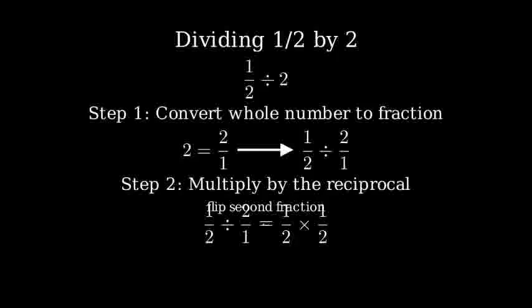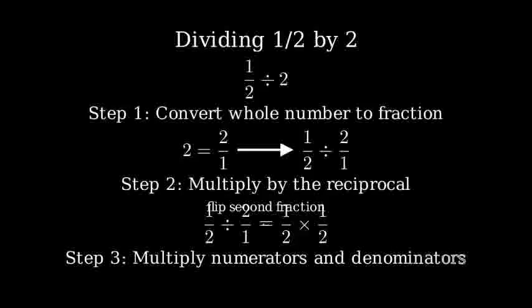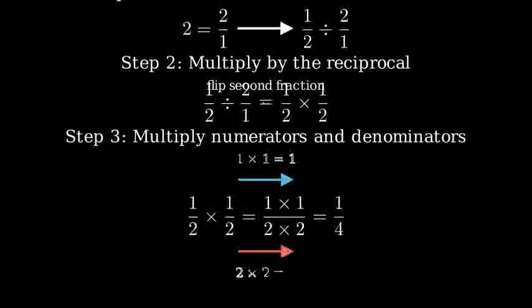Change the division sign to multiplication. Now we can multiply the fractions. To multiply fractions, we multiply the numerators together and the denominators together. So one times one is one, and two times two is four.